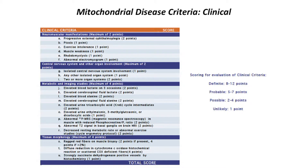Here you can see just the clinical criteria, and these include different types of symptoms and different organ systems, as well as a range of different tests that can be done on blood, urine, or on cerebrospinal fluid — which is the fluid that surrounds the spinal cord and brain — or on muscle tissue itself, or through brain imaging.